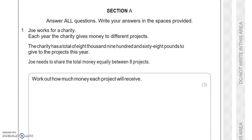Joe works for a charity. Each year the charity gives money to different projects. The charity has a total of £8,968 to give to the projects this year. Joe needs to share the total money equally between 8 projects. Work out how much money each project will receive.